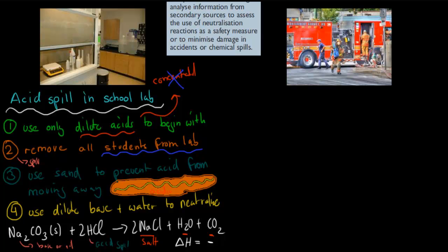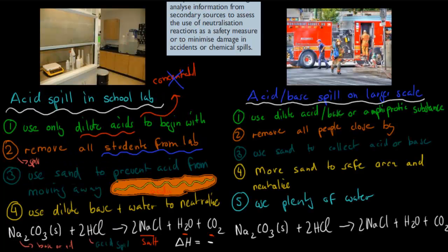That was the first one, what happens in labs. The second one is what happens on a larger scale, an acid spill on a larger scale. This might happen if there's a truck carrying acid that crashed somewhere, or was carrying bases and crashed, or maybe in an industry area somewhere, in a factory, you might have had a big spill.